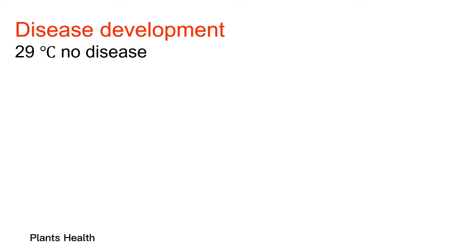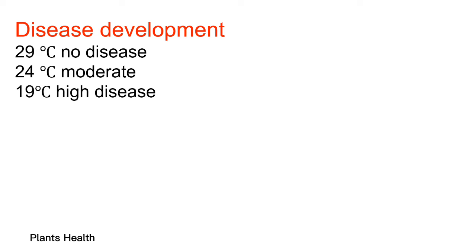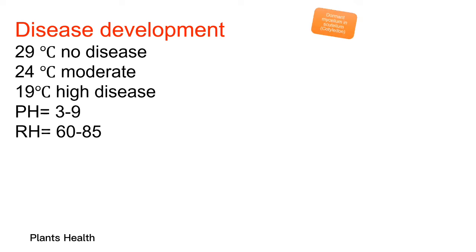Disease development is influenced by temperature: at 29°C there is no disease; at 24°C there is moderate disease; at 19°C disease is very severe. pH range needed is 3 to 9 for disease development. Relative humidity needed is 60 to 85%.